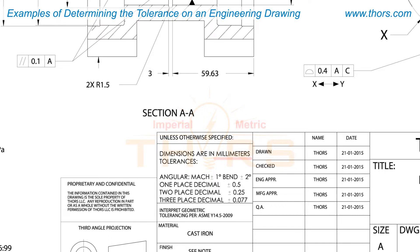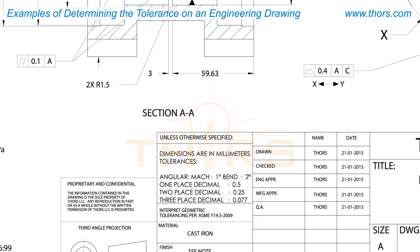In this example, the dimension 59.63 millimeters does not have a tolerance listed next to the dimension. To find the tolerance, look at the number of decimal places in the dimension. In this case, there are two decimal places in the dimension.